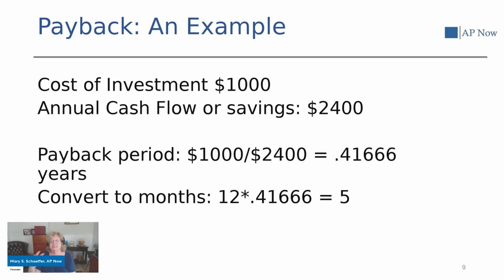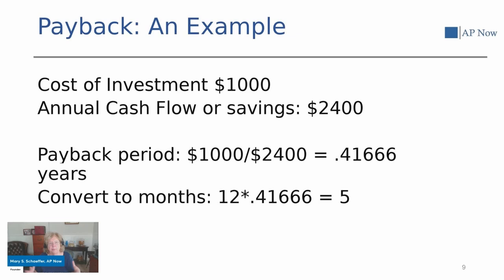Here's a simple example: the cost of the investment was $1,000 and your annual cash flow savings on this particular project is $2,400, or $200 a month. To figure out the payback period, we take the cost of the investment — $1,000 — divided by the annual cash flow savings of $2,400, which equals 0.4166. Then to convert that to months, you multiply by 12 and you come out with five months. So the payback for this particular project would be five months.